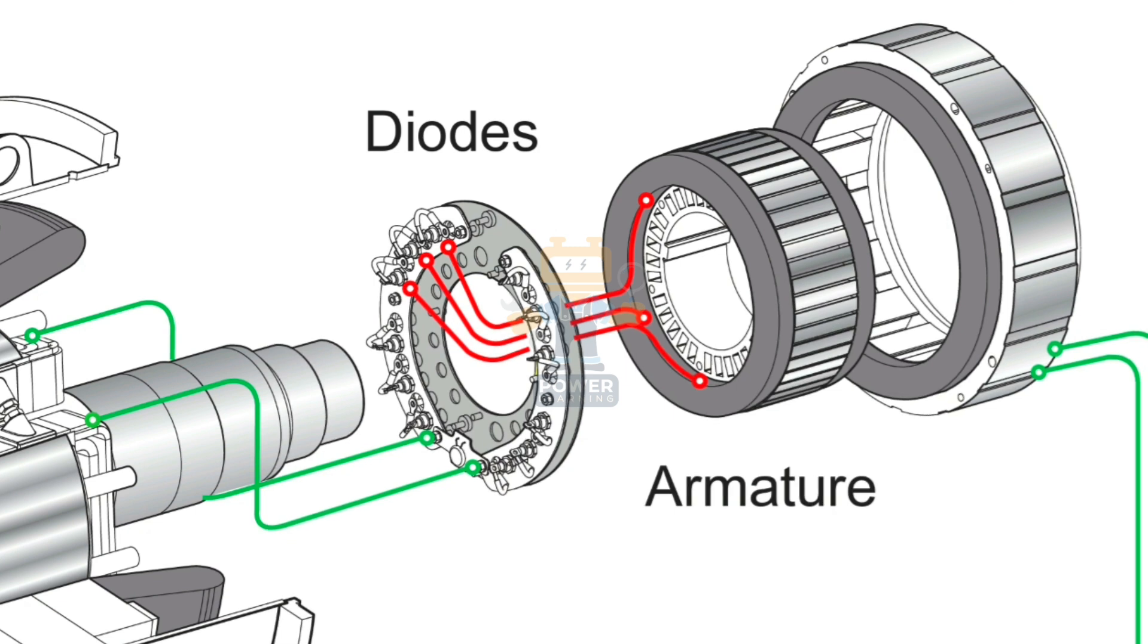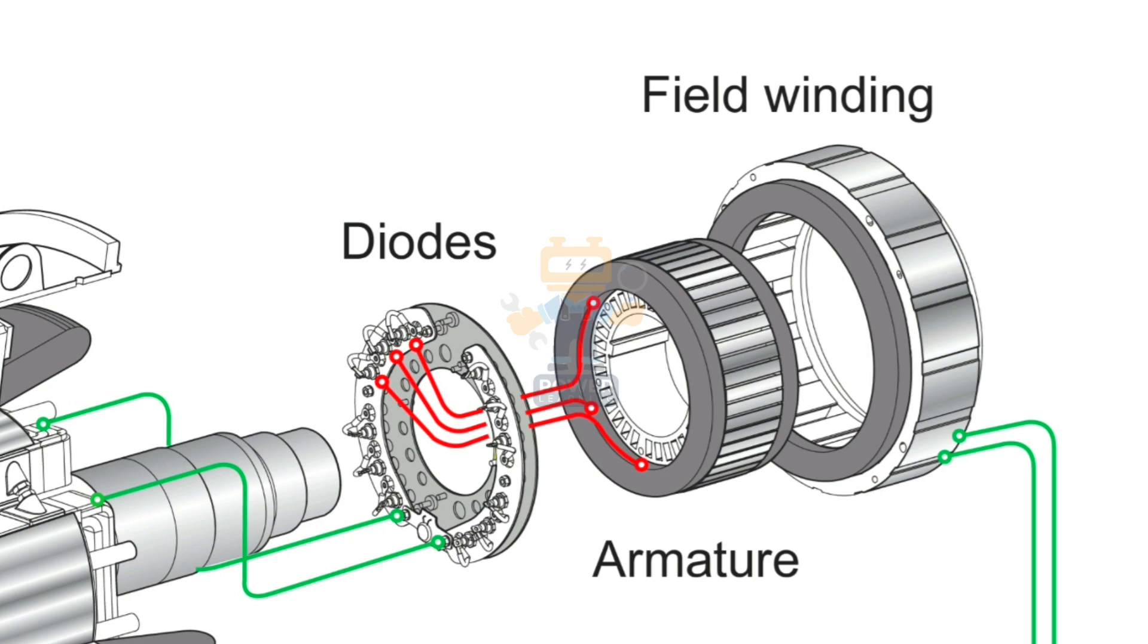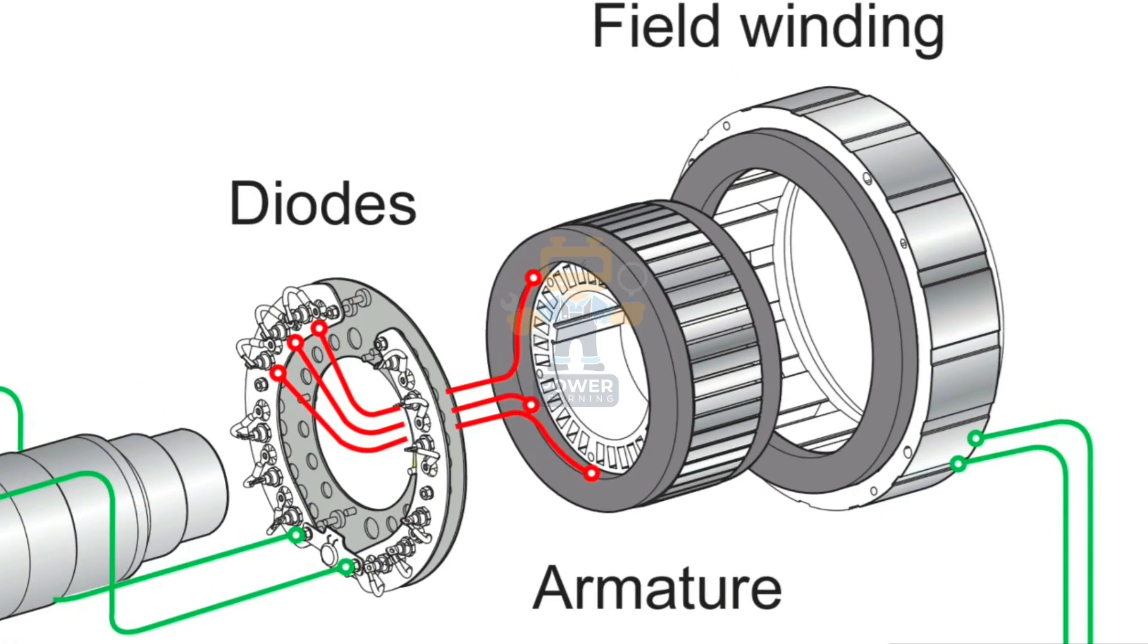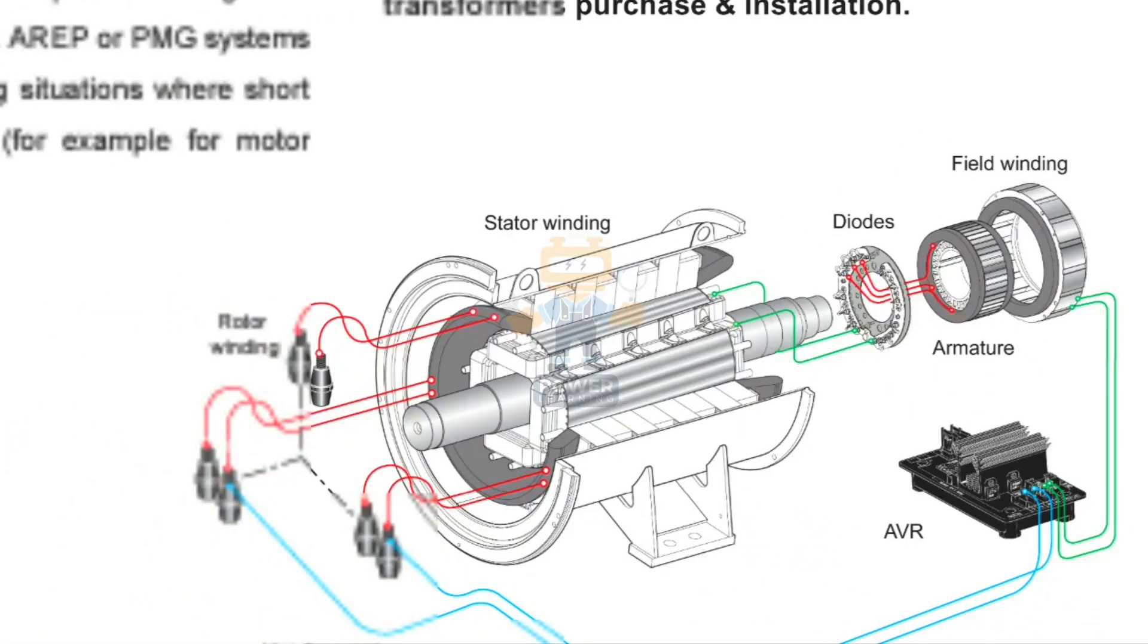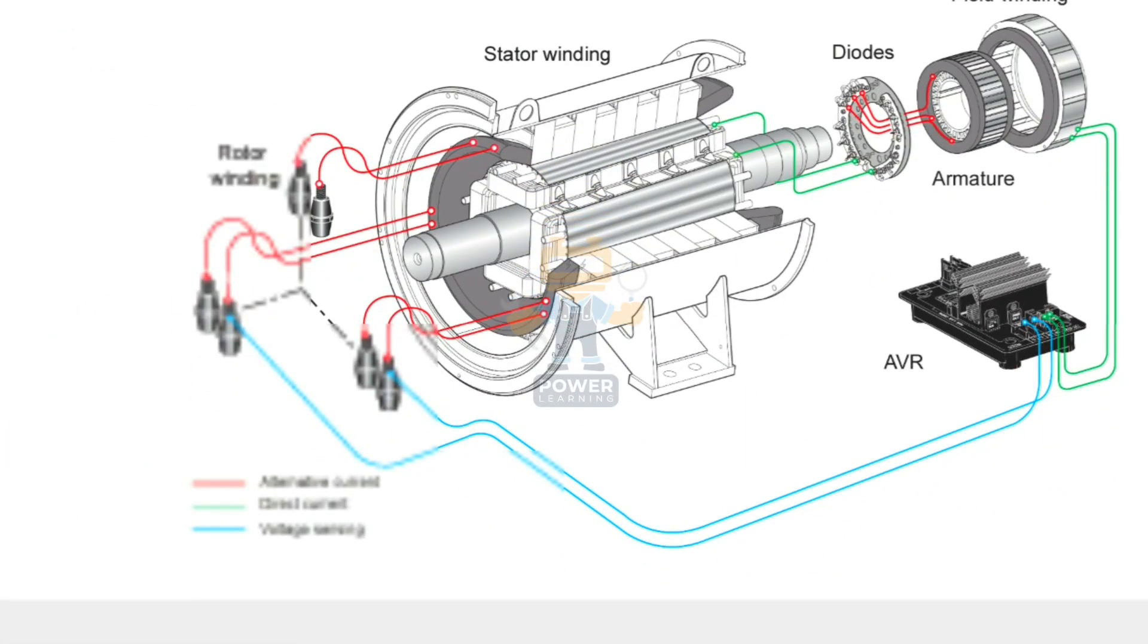This three-phase AC power we take from armature and give to our rotating diodes. These two parts, armature and diodes, are installed on the main shaft of the rotor, so they are always revolving with the engine, while our exciter field winding is stationary - not revolving.